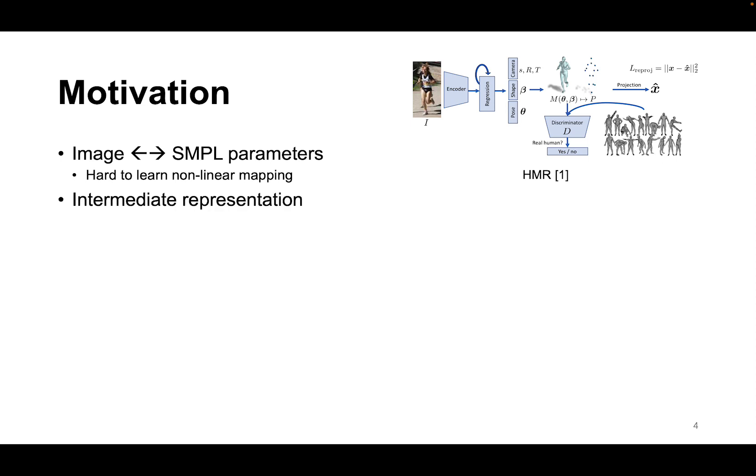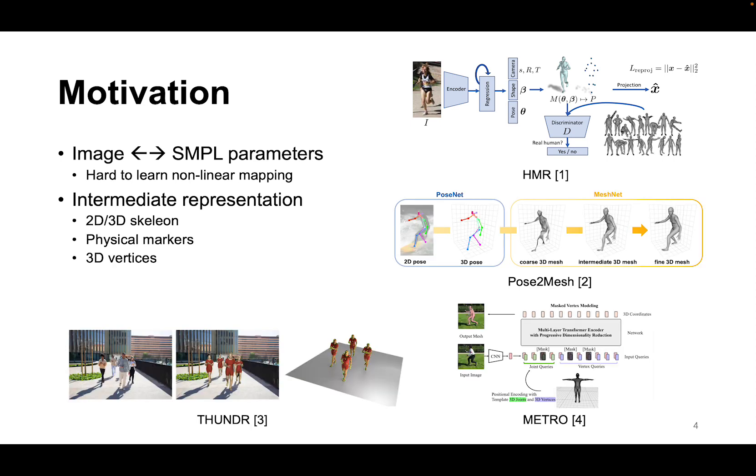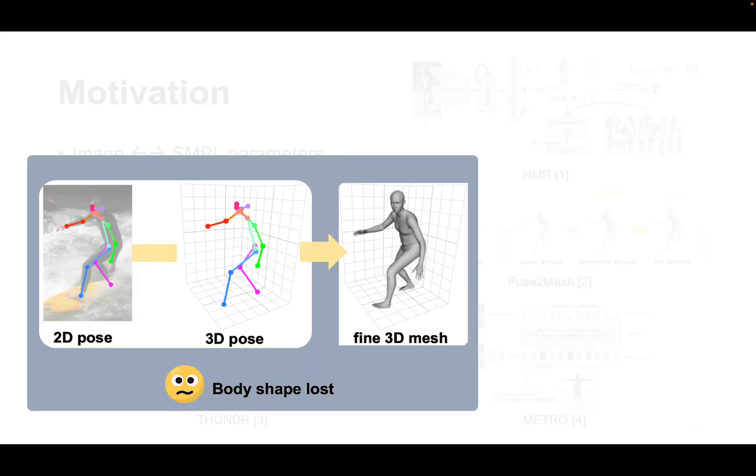Some works propose to introduce proxy tasks to get intermediate representations first, hoping to alleviate the learning difficulty. For example, intermediate representations of body skeletons, physical markers, downsampled vertices, body part segmentation masks, IUV images, and so on have been proposed.